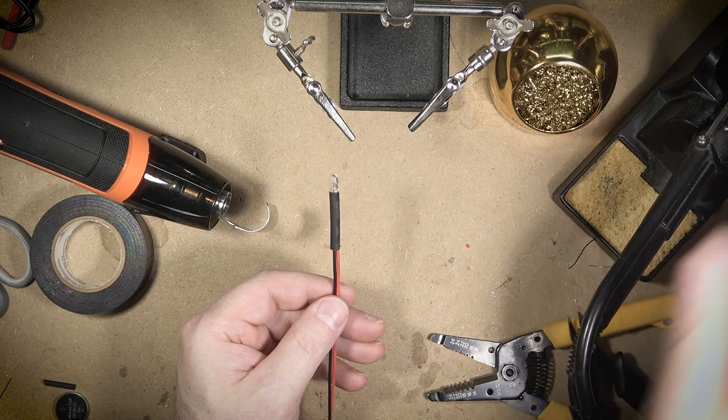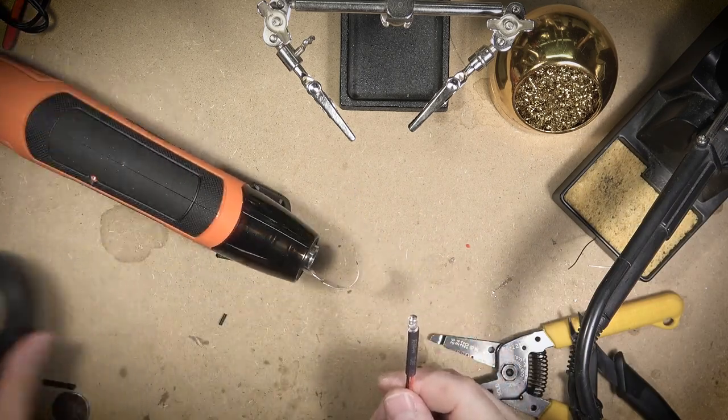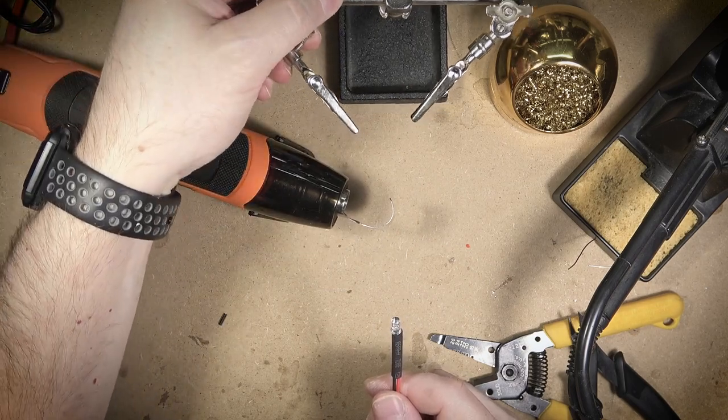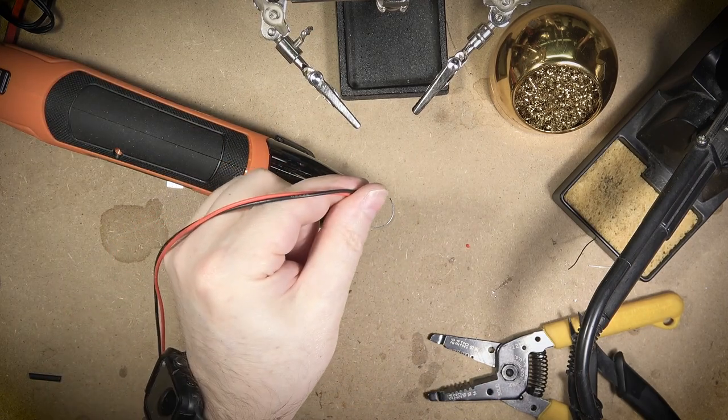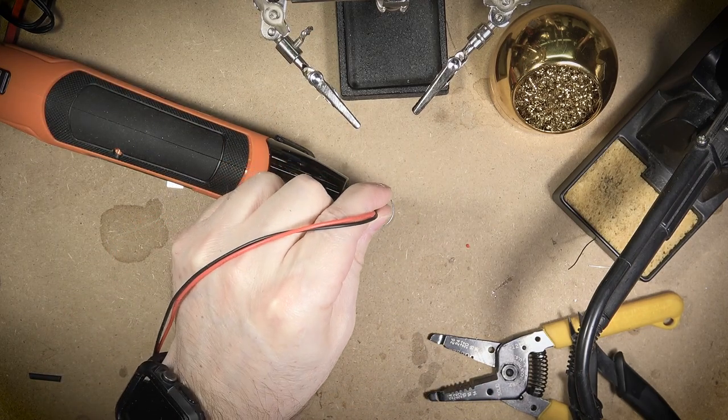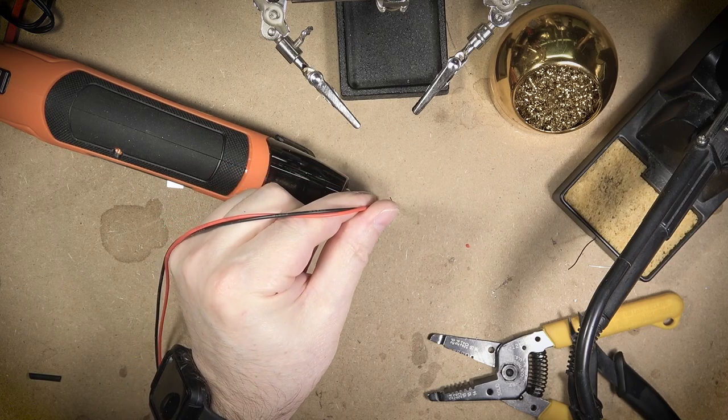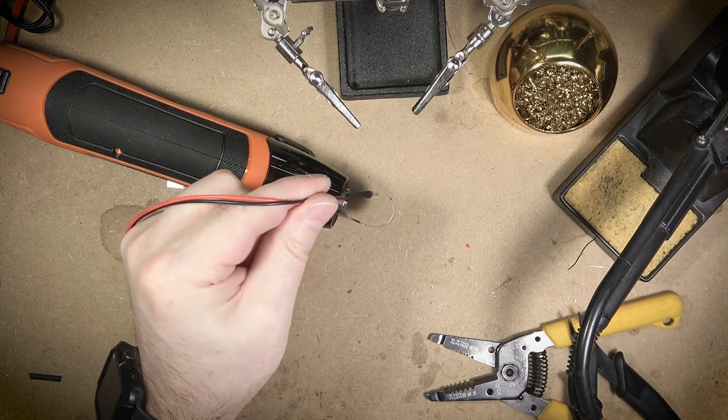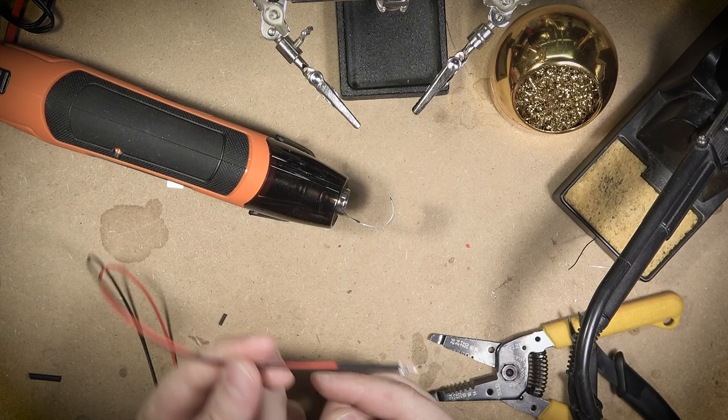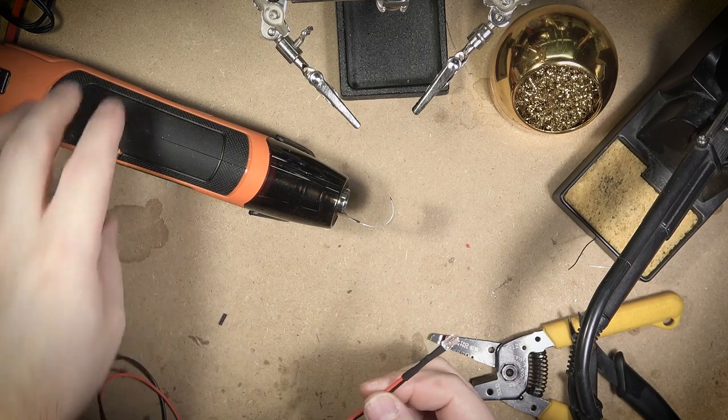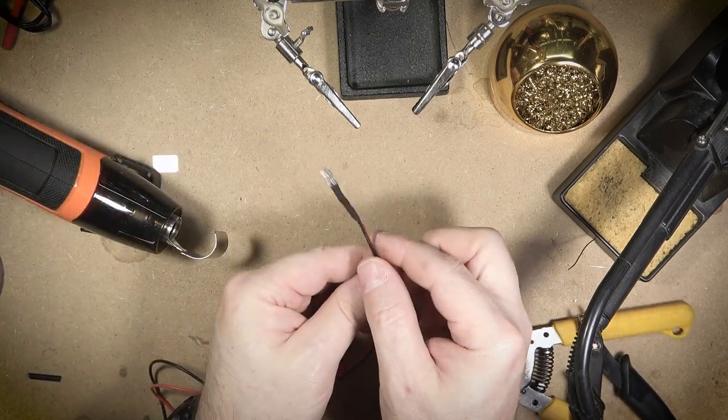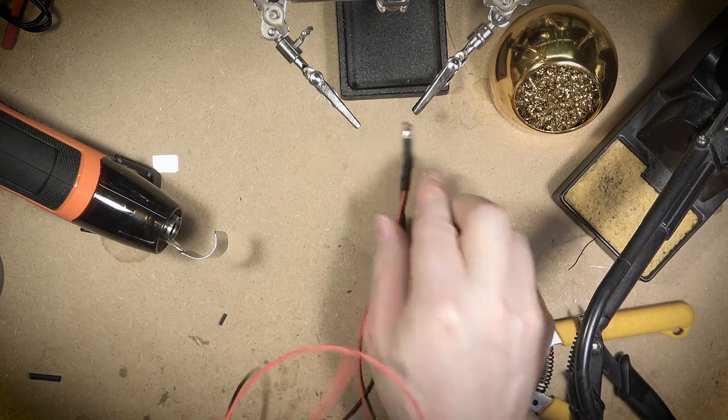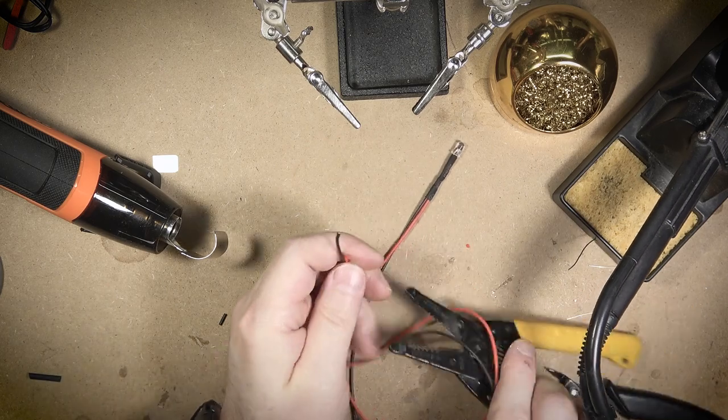Now I'm going to use this little nifty heat gun here to shrink that heat shrink tubing. You can use all sorts of different things. You can use a little butane lighter. You can use the torch. But I just find that this is a more controlled and easy way to do it. I do a lot of heat shrinking, so it was probably worth the $20 investment of that little heat gun. And there we go. It is all done. Easy as that. We have a very clean, very tidy LED pre-wired with an inline resistor.